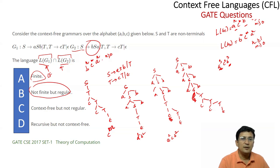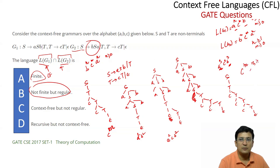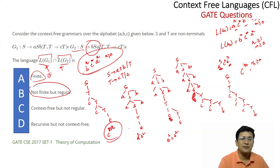In G1, S produces T, and T produces cT repeatedly, then T → epsilon, giving C^m. Similarly in G2, the same structure exists: S → T → cT → ... → epsilon, giving C^m where m ≥ 0. So C^m strings appear in both languages. Therefore the intersection contains at least { C^m | m ≥ 0 }, and this language is regular.